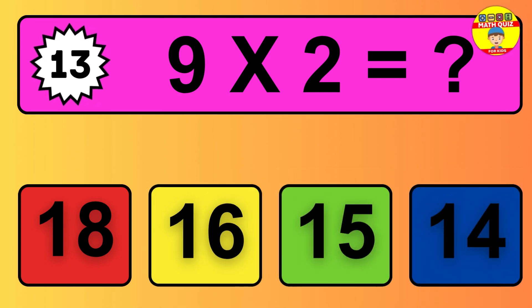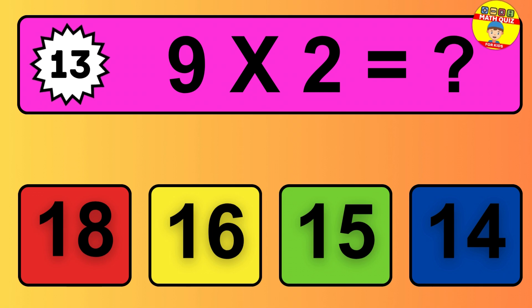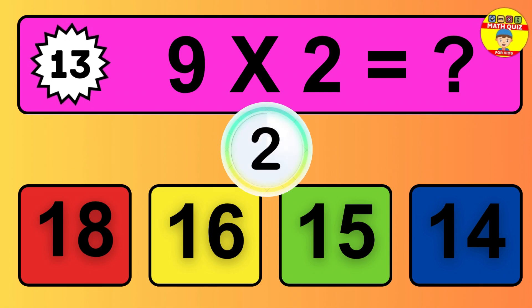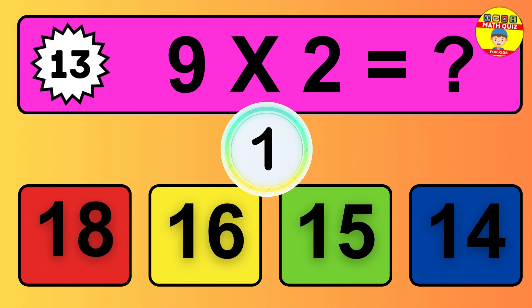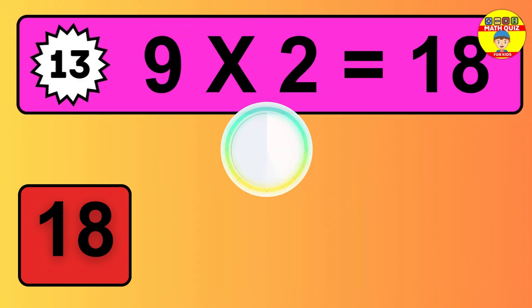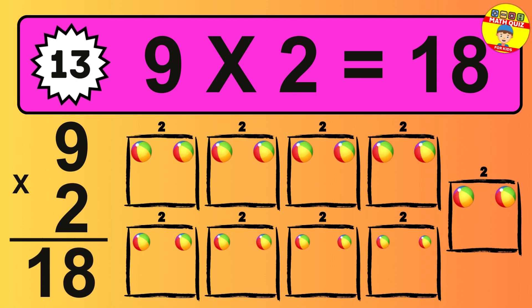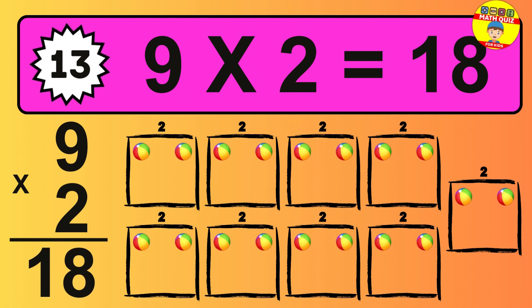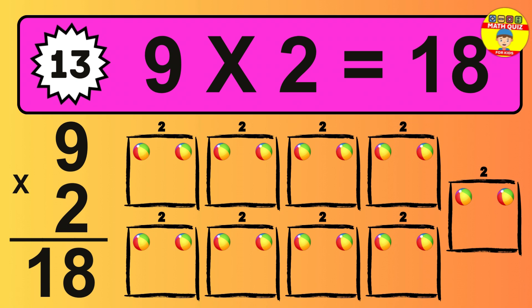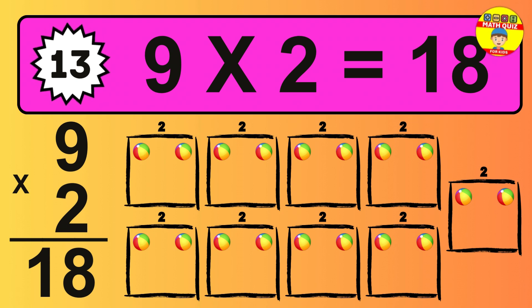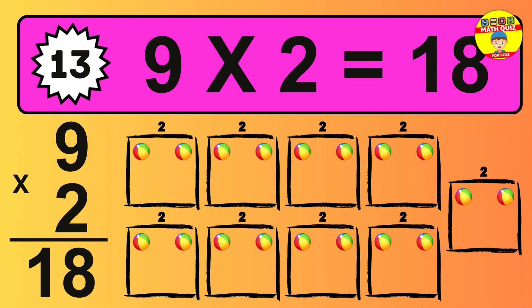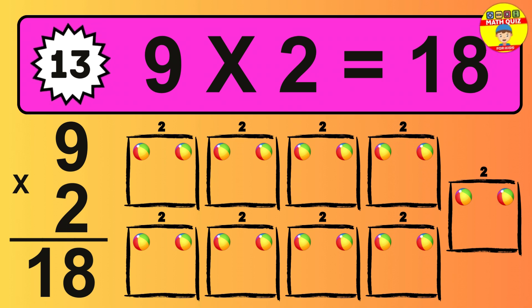Question 13. 9 times 2 equals what? The answer is 9 times 2 is 18. To calculate, we have 9 groups with 2 balls each one. So how many balls do we have? 18 balls.